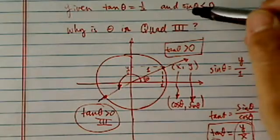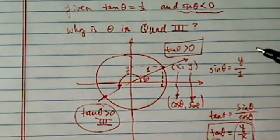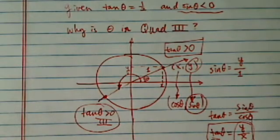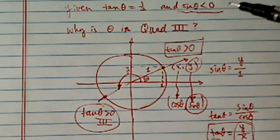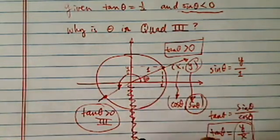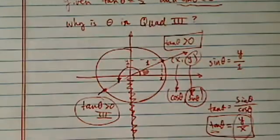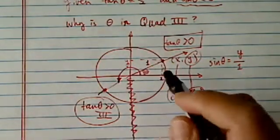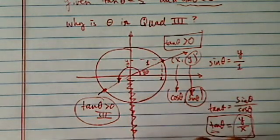...that sine theta is less than zero. Now, remember earlier, we said sine theta is really the value for y in our unit circle. So if sine theta is less than zero, that's saying it has to be in the bottom half of the x-y plane here. So on this side, y is less than zero.